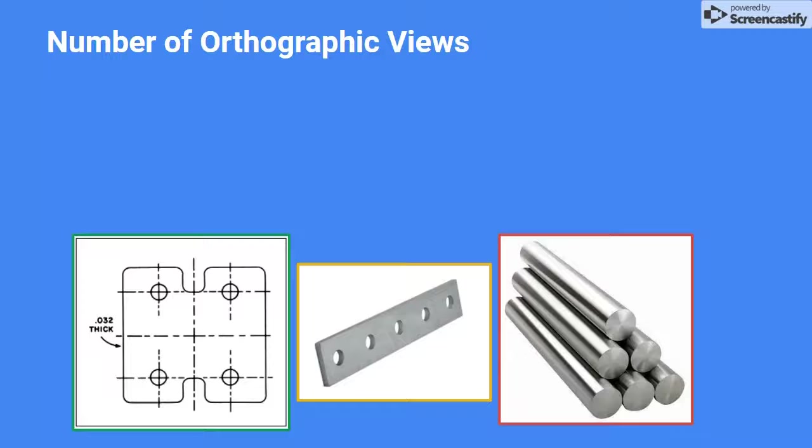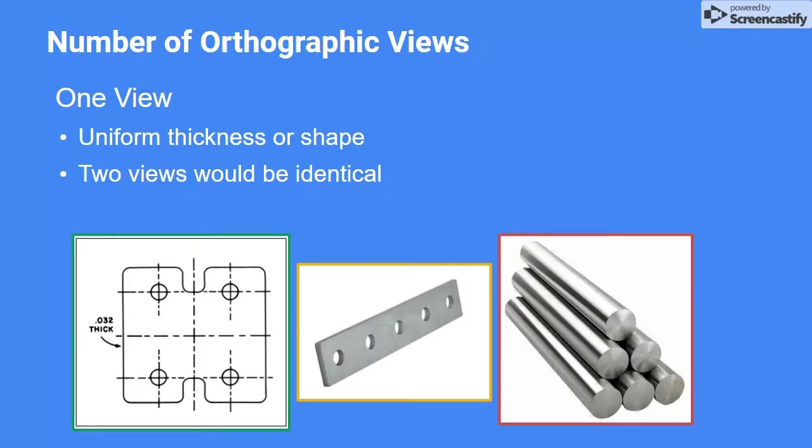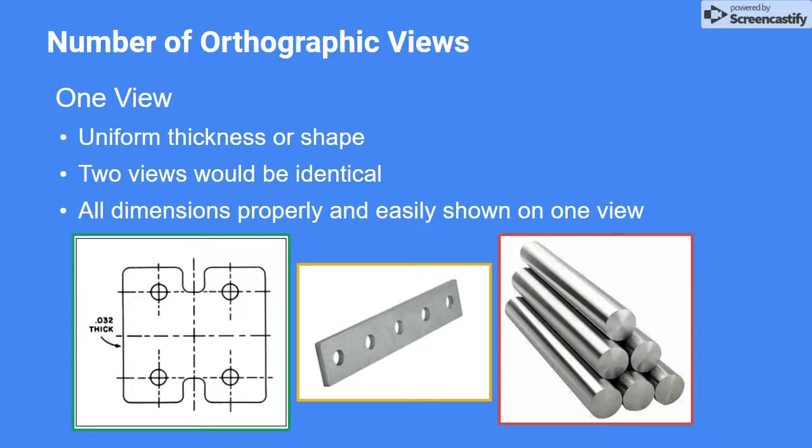Some objects require only one orthographic view. In these cases, adding more views would be a waste of time and drawing space. So the minimum number of views required is ideal. For flat objects that are a uniform thickness, it would be appropriate to include only a front view where height and width can be shown, and to indicate depth using a note on the page.